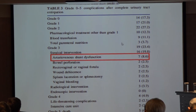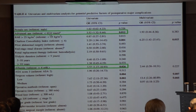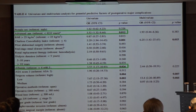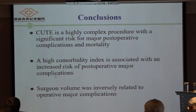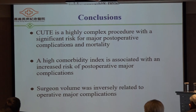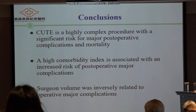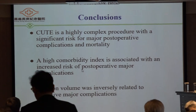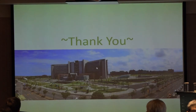In univariate analysis, advanced age and BUN level were significantly different. However, in multivariate analysis, only Charlson comorbidity score and surgical volume were significant. Our conclusion is that this procedure is highly complicated with significant risk of major postoperative complications. A higher Charlson score is associated with increased postoperative complications, and surgical volume is inversely related to operative complications.